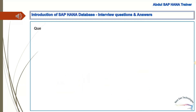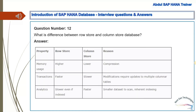Question 12: What is the difference between row store and column store database? Answer: Memory usage is higher in row store tables whereas it is lower in column store tables. Compression ratio is better in column store compared to row store. Transactions (writes) are faster in row store whereas they are slower in column store. Analytics (reads) are slow in row store whereas they are fast in column store.